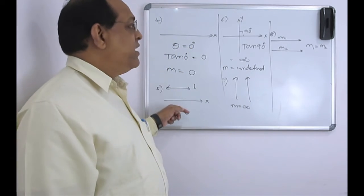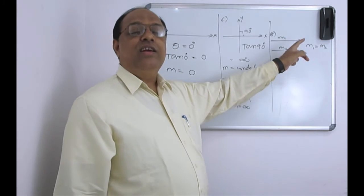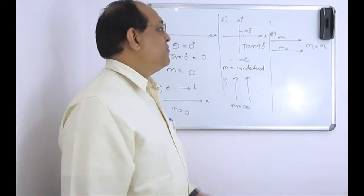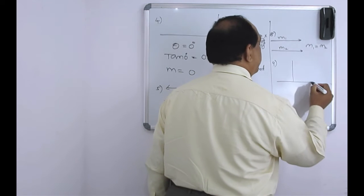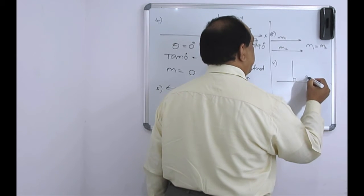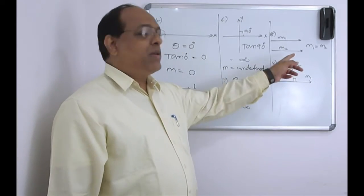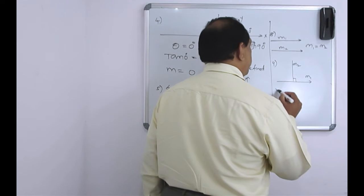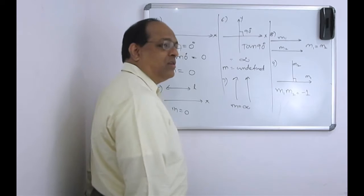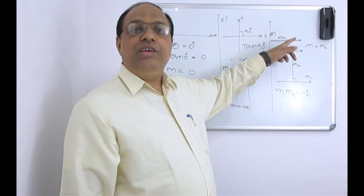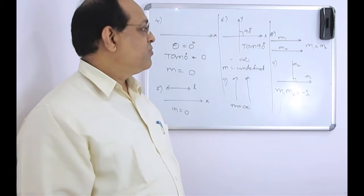Similarly, if two lines are perpendicular to each other, with slopes m1 and m2, then the product of the slopes is equal to minus 1. That's all for the slope properties.